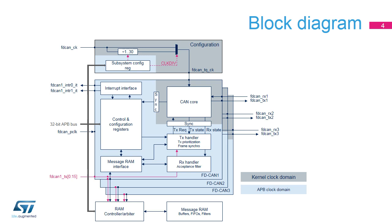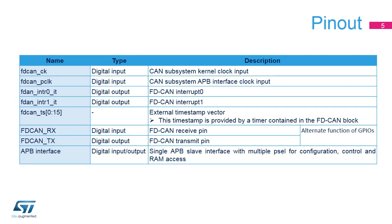This RAM is used to contain the filters, buffers and FIFOs. The CAN subsystem I/O signals and pins are detailed in this table. Two clocks are provided to the FDCAN unit: FDCANCK, the kernel clock used to obtain the bitrate, and FDCAN-APB, which is the APB clock used to access memory-mapped registers and message RAM.